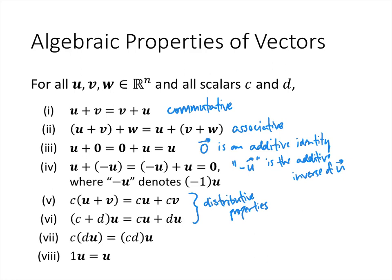And number seven says that c times (d times u) is equal to (cd) times u. That's another associative property. It's not quite the same as an associative property because these aren't the same operations. d times u is scalar multiplication, but c times d is just regular multiplication of real numbers. So it's a kind of associativity. And then finally, number eight says that when we multiply the number 1 by the vector u, we just get u. And that's a kind of multiplicative identity.